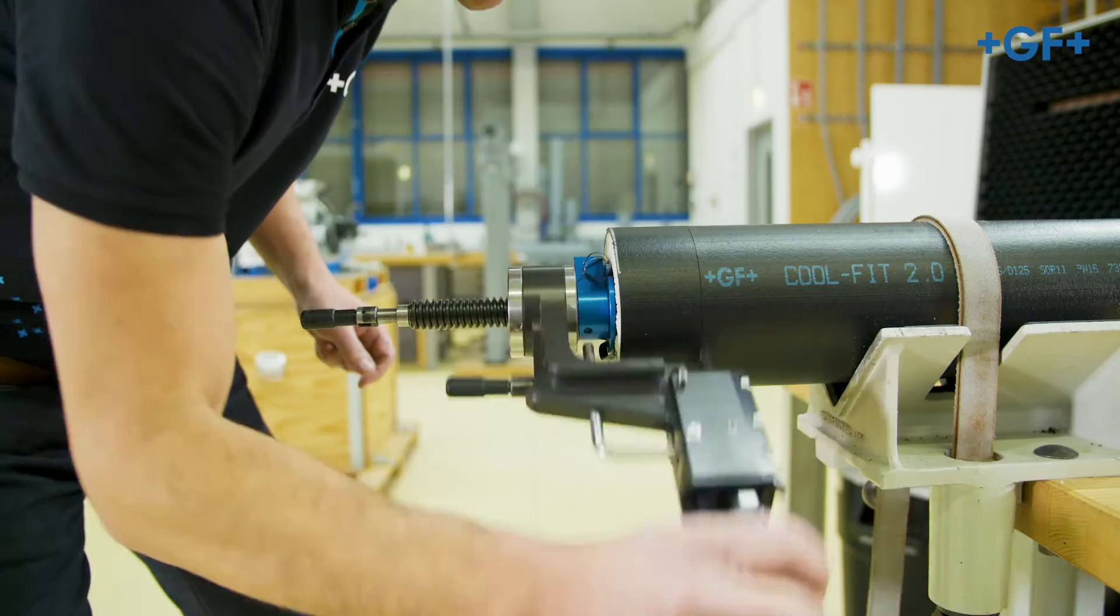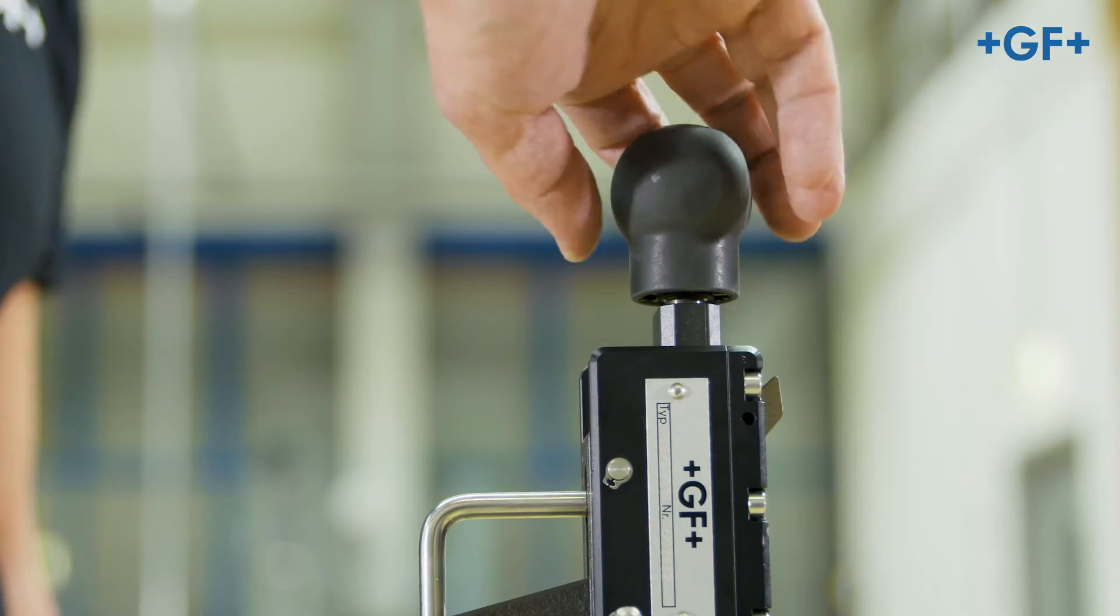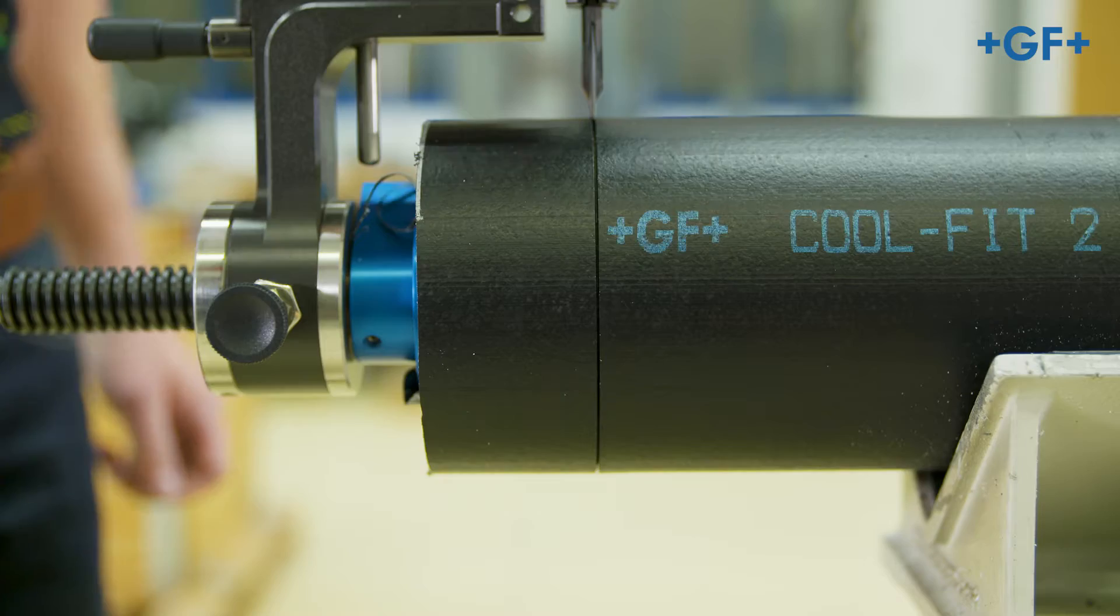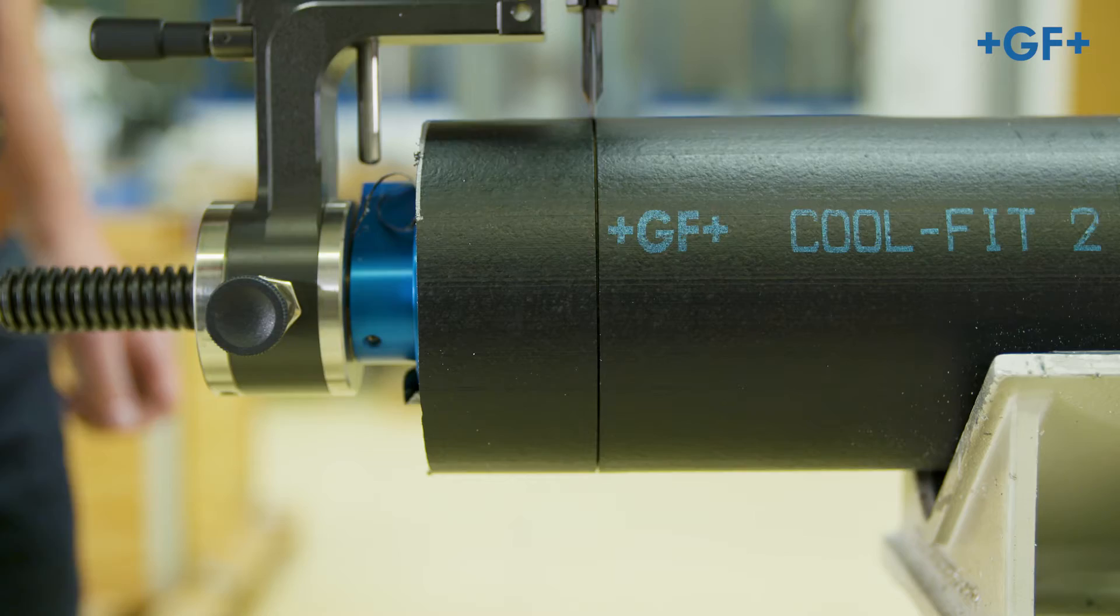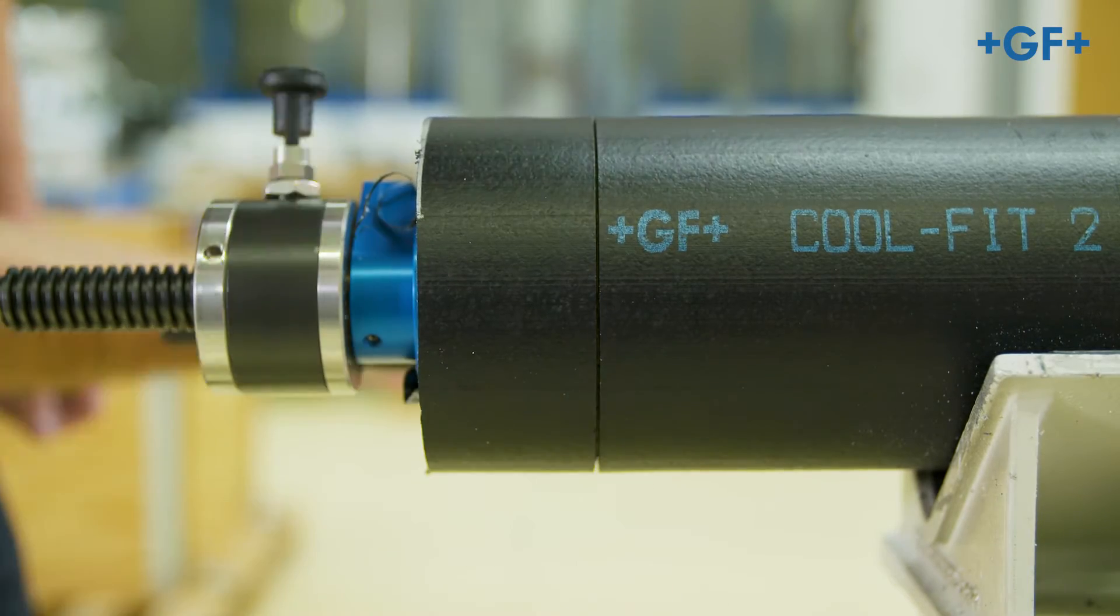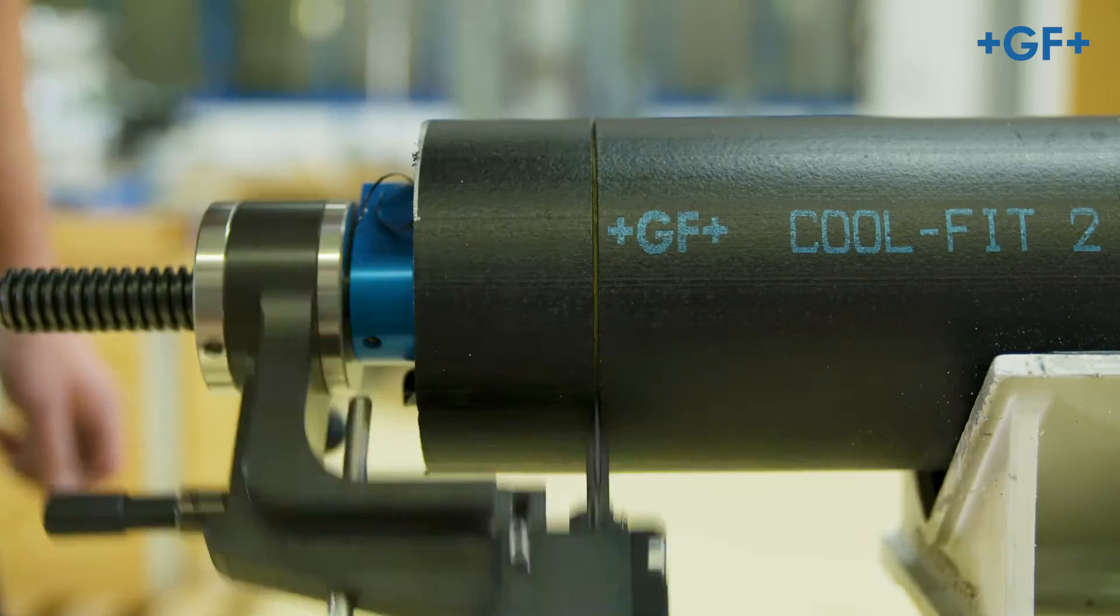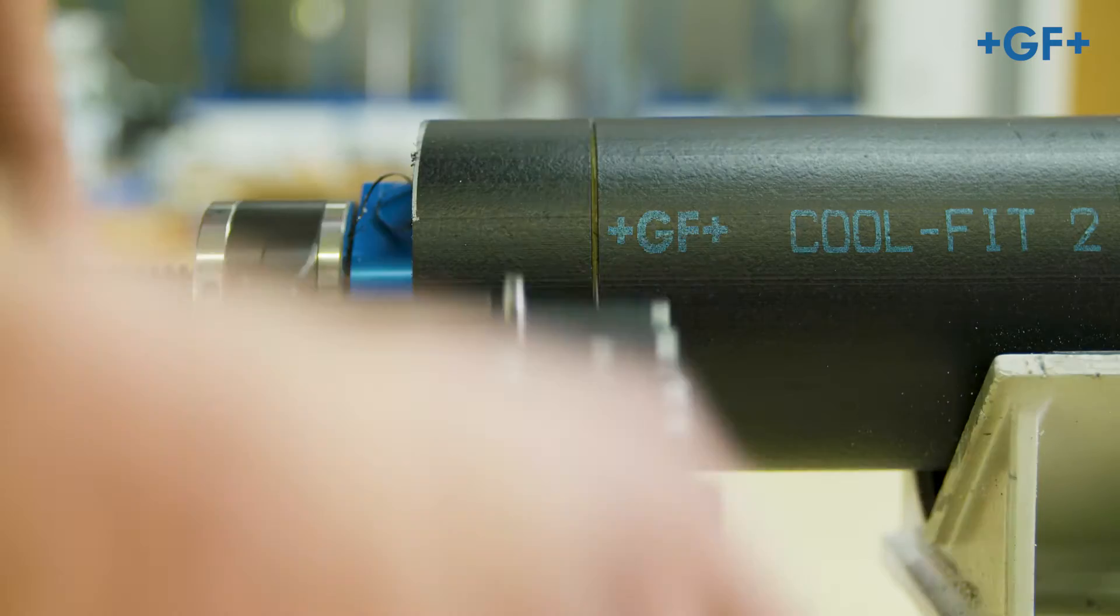Turn the foam removal unit once clockwise and move the blade forward by a quarter turn at the lever. Continue doing so until the insulation audibly separates from the CoolFit pipe.